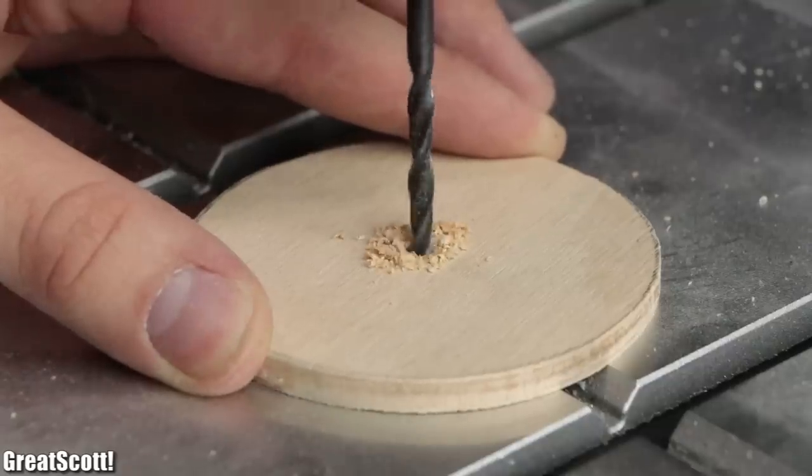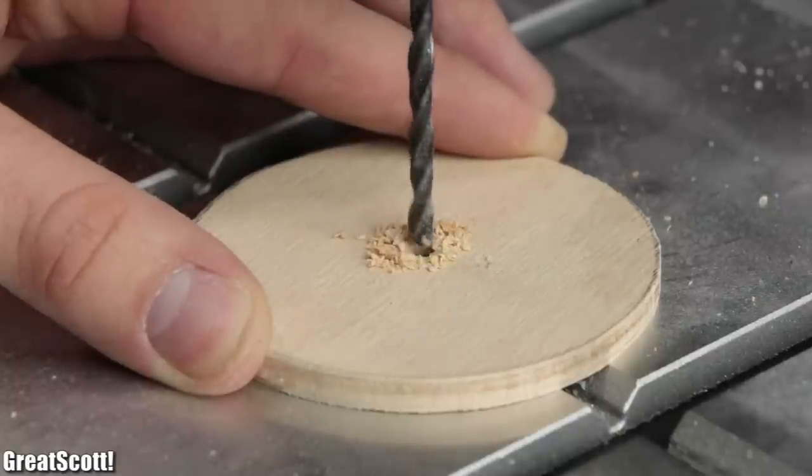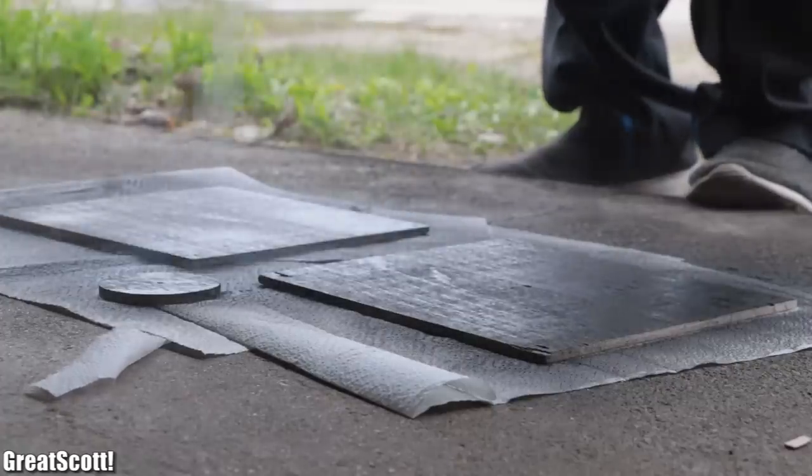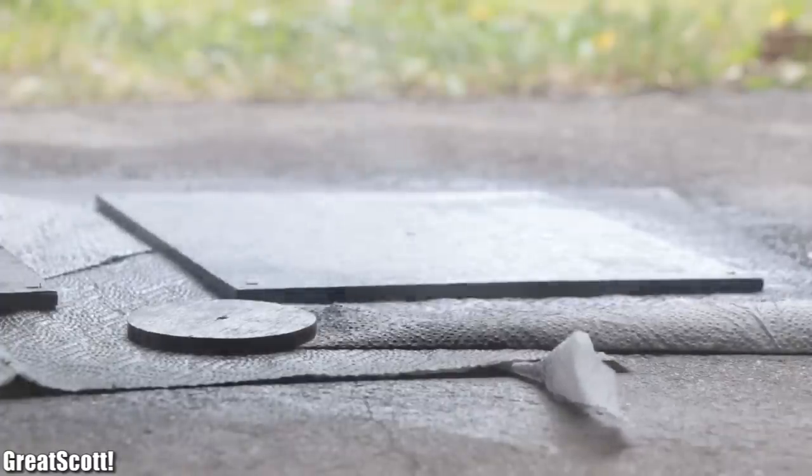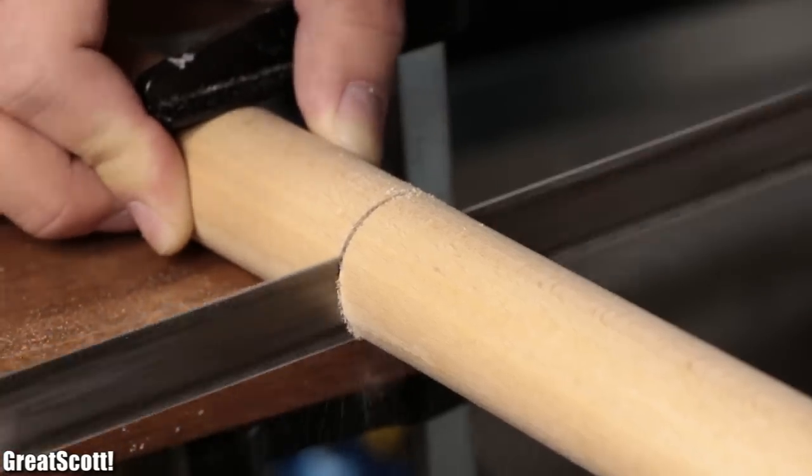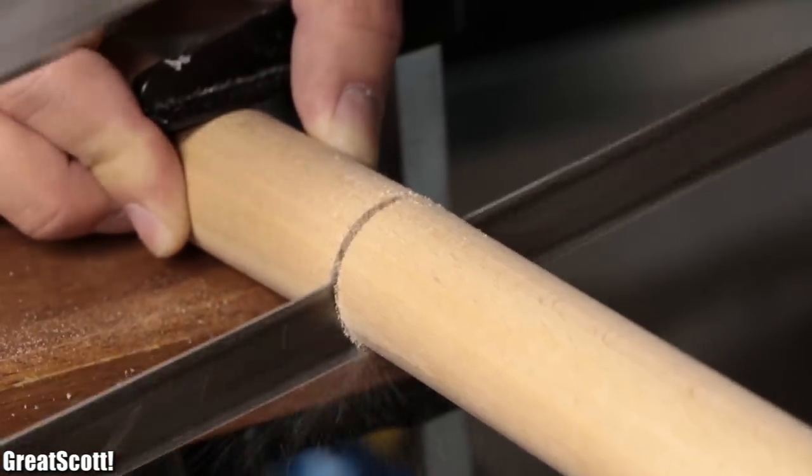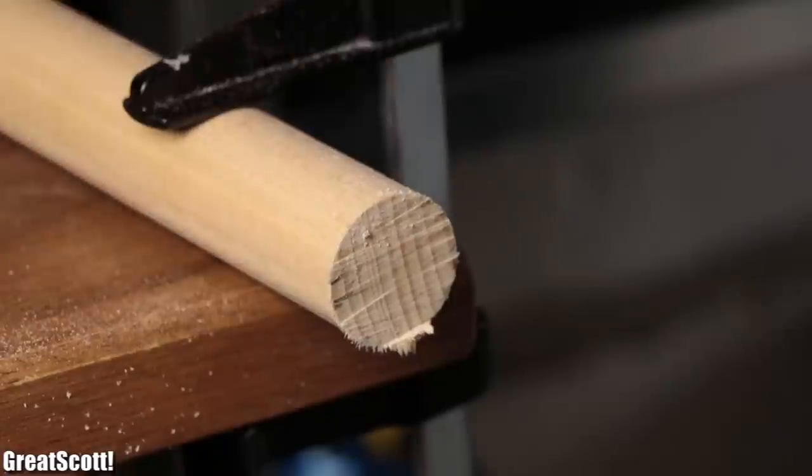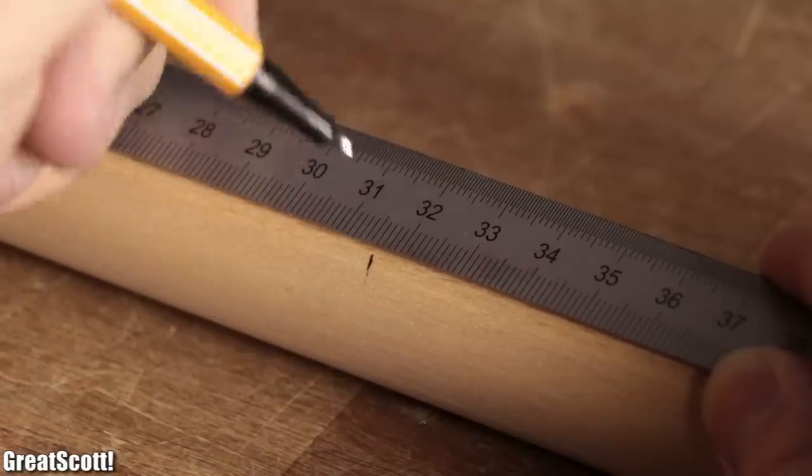At this point I spray painted the square and circle plywood pieces black and moved on by utilizing my hand saw to create a shorter piece of the spar from the previous episodes with a length of 31.5 centimeters.